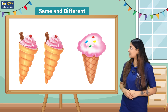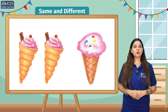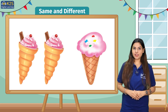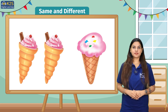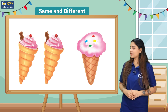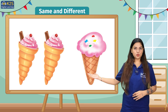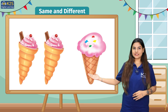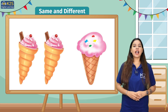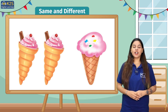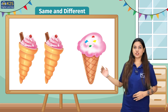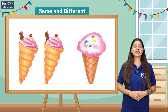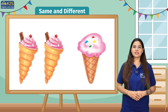Kya aap bata sakte hain bachcho ke in dono pictures mein kya same hai aur kya different. In the first picture where we have two ice creams, both ice creams have a chocolate, a cherry, and a same shape cone. This first picture is an example of same.